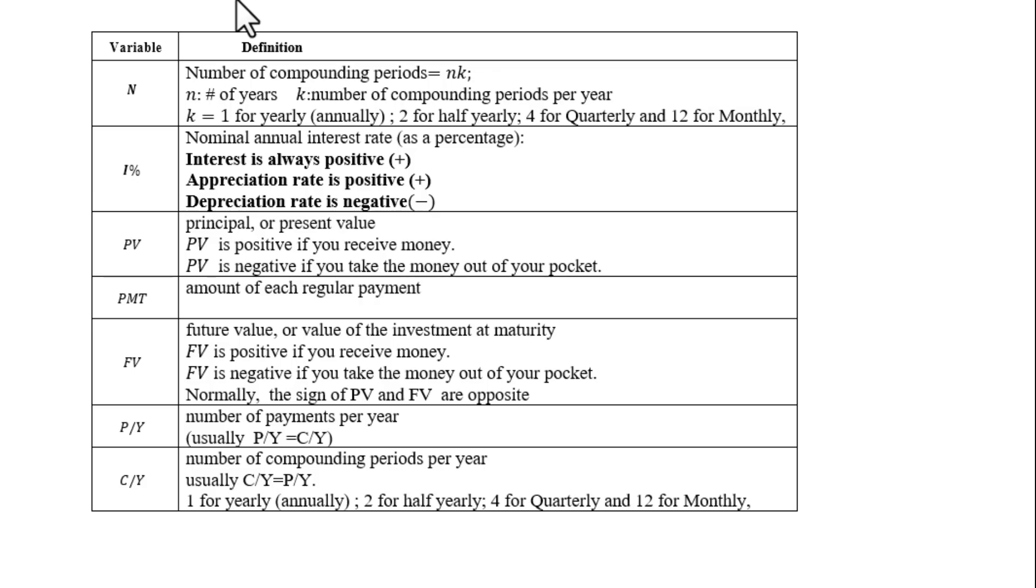Let's review TVM solver. Capital N means number of compounding periods equals N times K. N is the number of years. K is number of compounding periods per year. Annually, K equals 1.